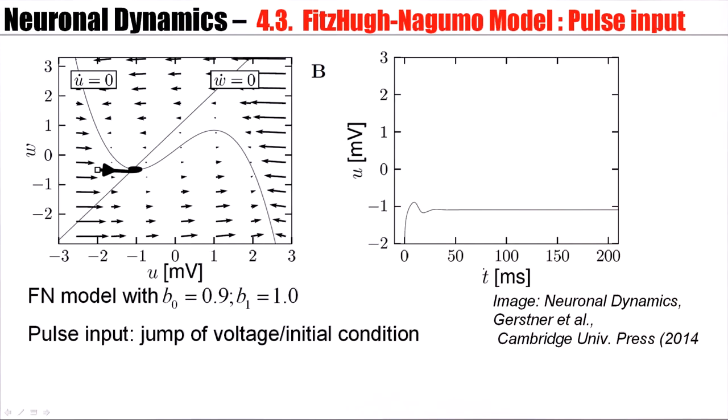Well, this was a hand-drawn figure. Here is a computer-generated graph. The resting potential is here, about at minus 1.1. Now, if you give a negative current pulse, the voltage will jump to a new initial condition. And from this new initial condition, it will approach the resting potential with a little oscillation and then we are here at the resting potential.